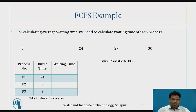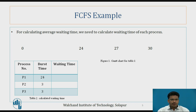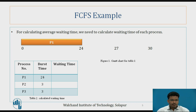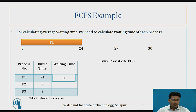Let's see how we are going to calculate the average waiting time. First, we are going to draw the Gantt chart for this table. P1 has a zero waiting time because it is the first process to start execution, executing from 0 to 24 milliseconds. So its waiting time is 0.